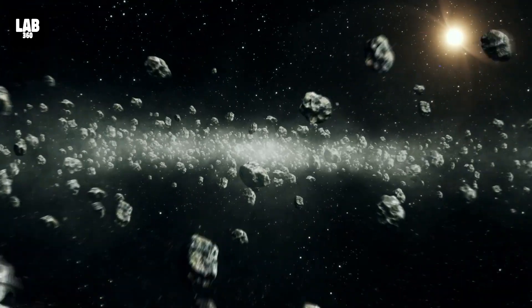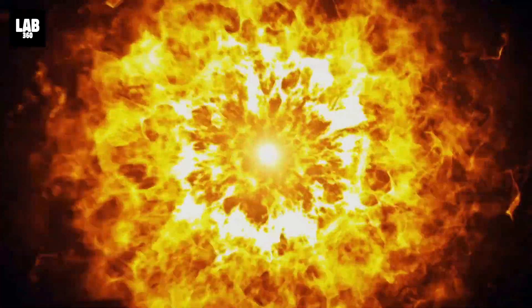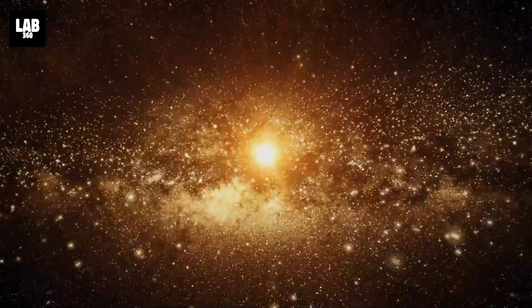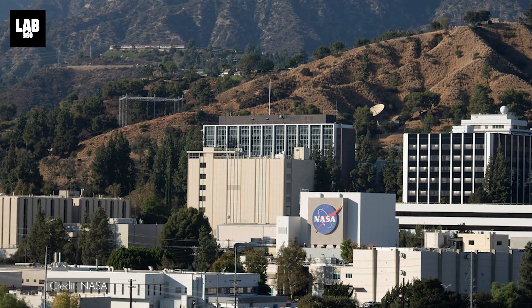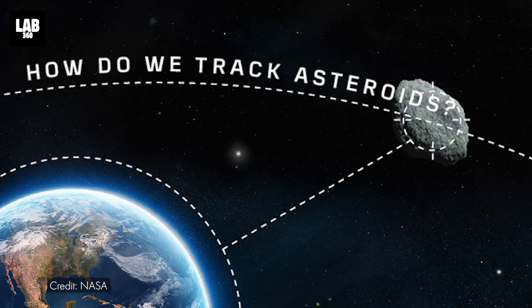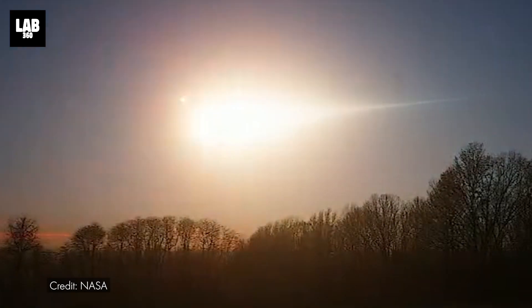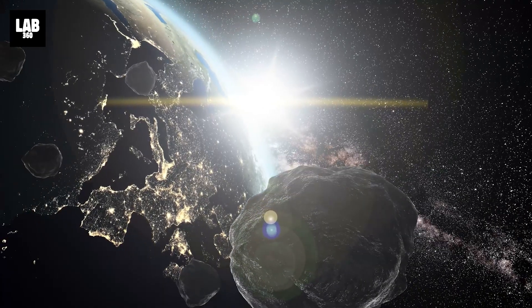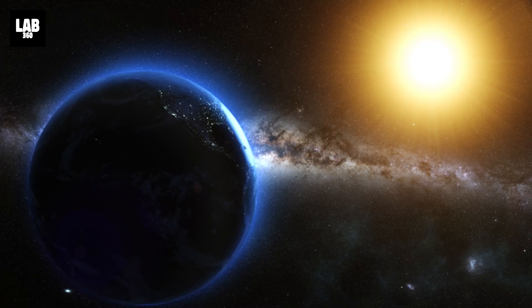Asteroids are rocky fragments left over from the formation of the solar system about 4.6 billion years ago. According to the NASA Jet Propulsion Laboratory, JPL, which tracks asteroid movement, an asteroid is classified as a near-Earth object when its distance from our planet is less than 1.3 times the distance from Earth to the Sun.